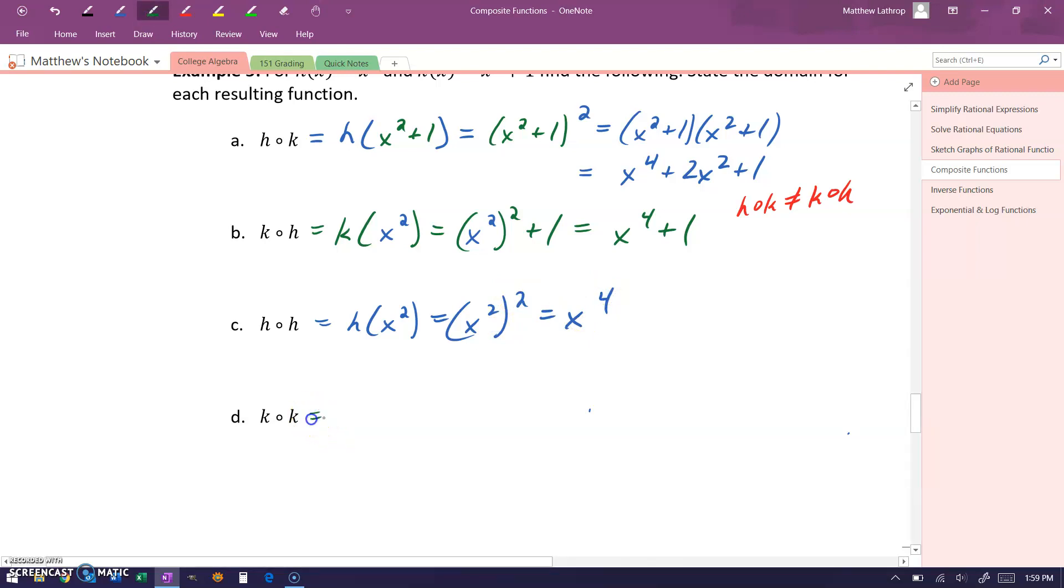And we can take k of k to take our function k and evaluate it at x squared plus one. So again, creating the composition of that function with itself will give us x squared plus one squared plus one, which will end up simplifying to x to the fourth plus two x squared plus two once we expand and combine any like terms.